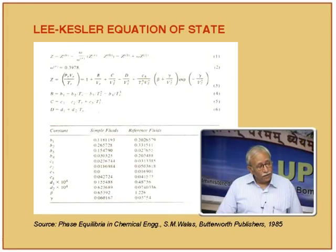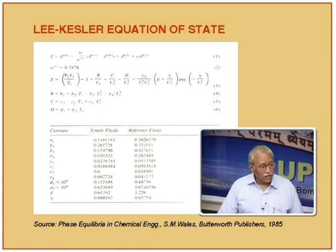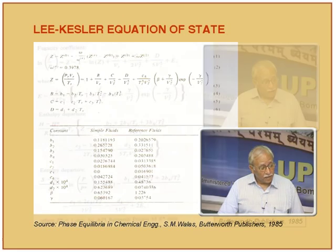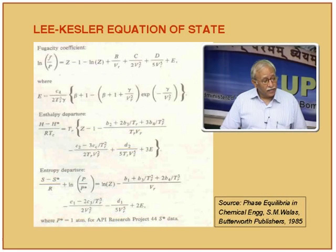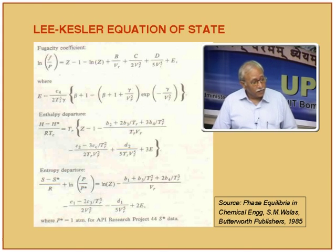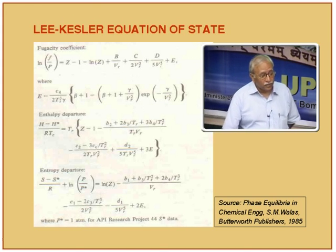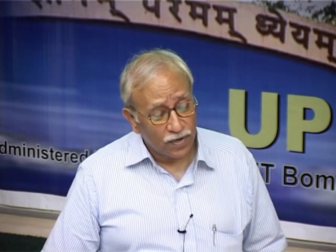This is the Z form of the Lee-Kessler equation — it has finally 11 parameters — and then the expressions for the fugacity coefficient, the enthalpy departure, the entropy departure: all these equations enable you to calculate these properties in totality.